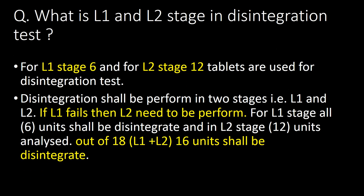What is the L1 and L2 stage in disintegration test? For L1 stage, 6 tablets are used; for L2 stage, 12 tablets are used. Disintegration is performed in two stages — L1 and L2. If L1 fails, L2 needs to be performed. For L1, all 6 units shall disintegrate. In L2 (12 units analyzed, 18 total combined), 16 out of 18 units shall disintegrate.